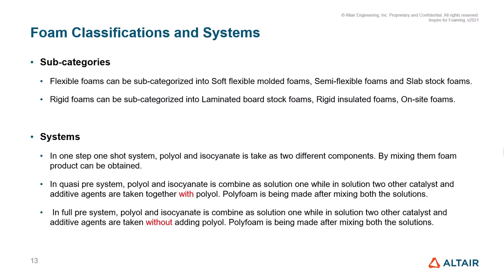For the 1-step 1-shot system, the polyol and isocyanate are taken as two different components, and by mixing them a foam product can be obtained. In the quasi-prepolymer system, polyol and isocyanate are combined as solution 1, while in solution 2, other catalysts and additive agents are taken together with polyol. Polyfoam is made after mixing both solutions.